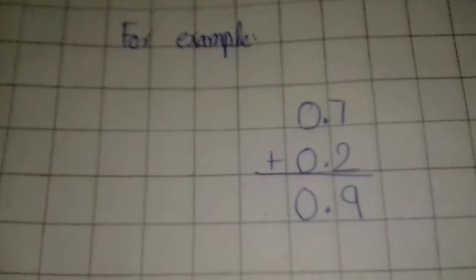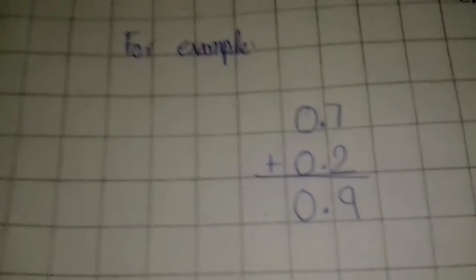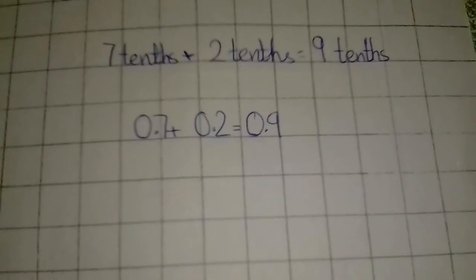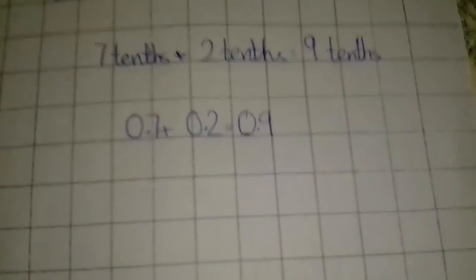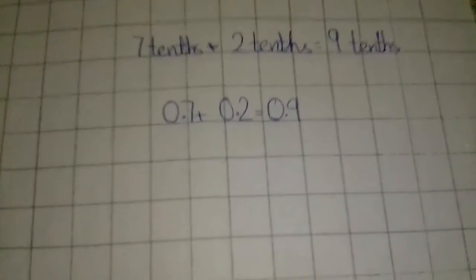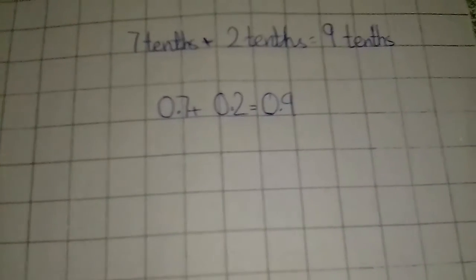For example, 0.7 plus 0.2 is equal to 0.9. 7 tenths plus 2 tenths is equal to 9 tenths. So 0.7 plus 0.2 is equal to 0.9.